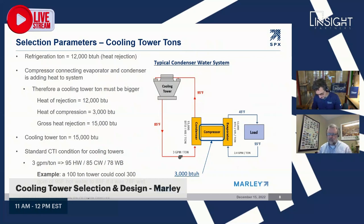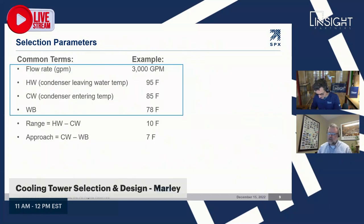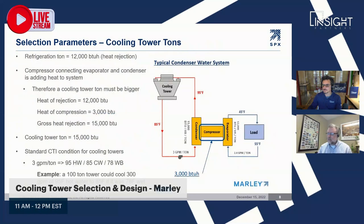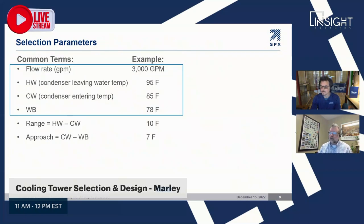This ton methodology is fine for initial selections and budget requests to get initial layouts and sizing. However, for a more precise selection, we typically recommend using flow rate, hot water temperature, and cold water temperature — these give you an actual heat load. Today's chillers are much more efficient and may not add 3,000 BTUs, so there's often a little extra padding when using the ton-based approach.